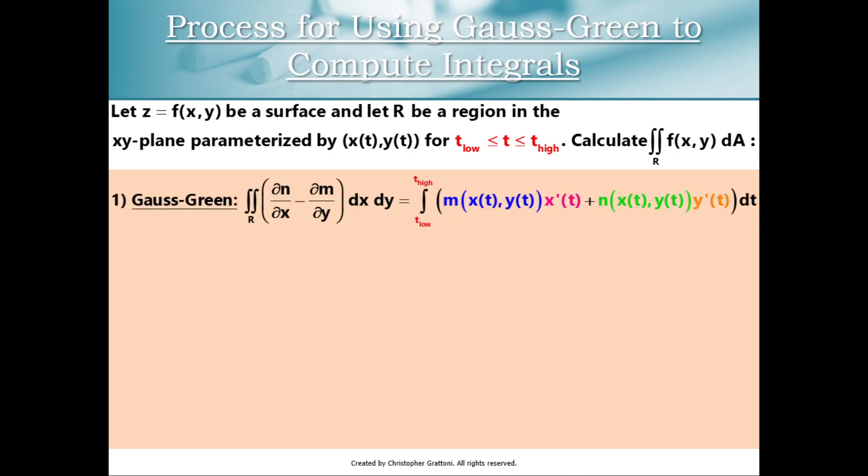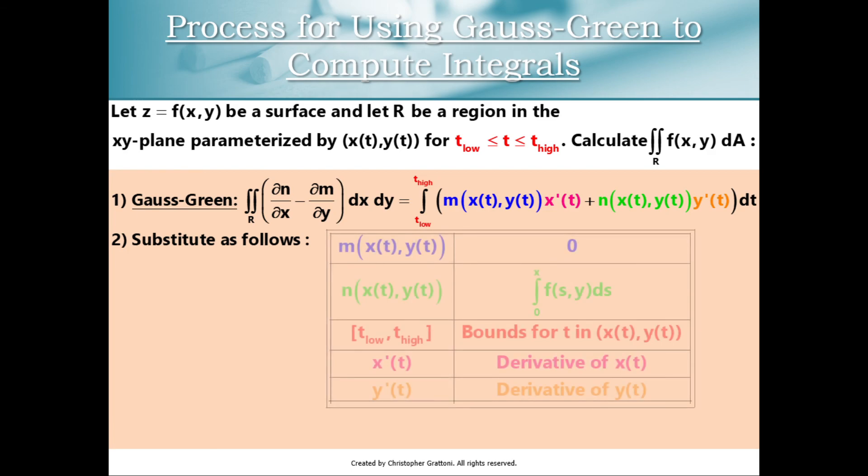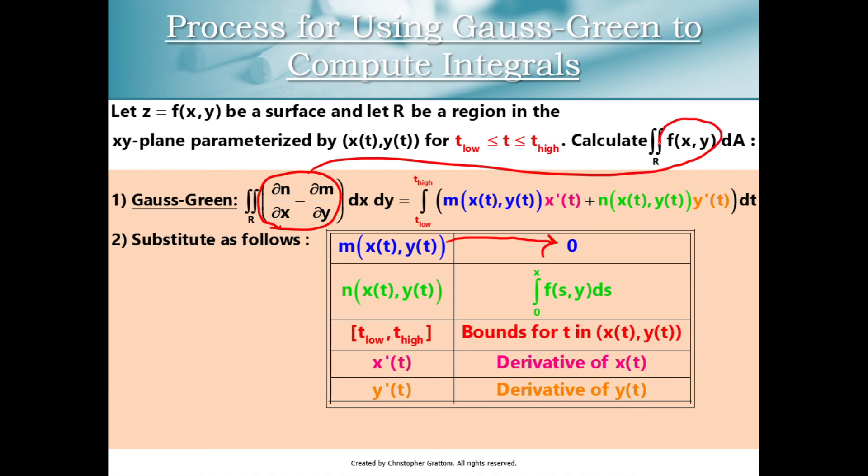Now, like I said, this is a cookie cutter recipe. So we start with a formula that we don't understand super well yet, but we will soon. Then we substitute into that formula. Now, I'm choosing to make m equal to zero. Every year, I will get a couple students raising their hand and saying, wait, Mr. Grattoni, why are we plugging in m equals zero? Why didn't you make n equal zero? And the answer is you could. This formula has two pieces inside of it, but we're just trying to compute the double integral of f. And so if we could find a way to stuff f into this formula, we're in good shape. So one way of doing it is making m equal to zero, and that'll work. But the other question I get is, could you make n equal to zero? And the answer is yes.